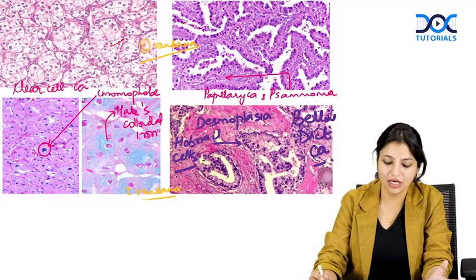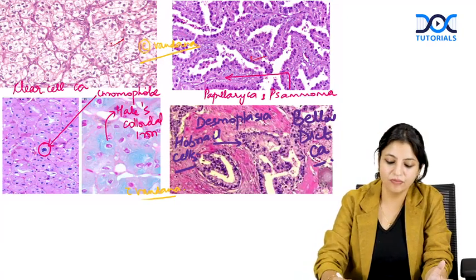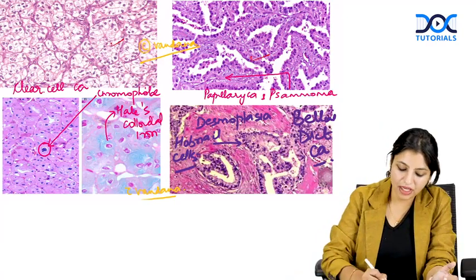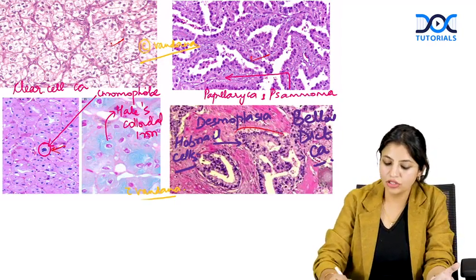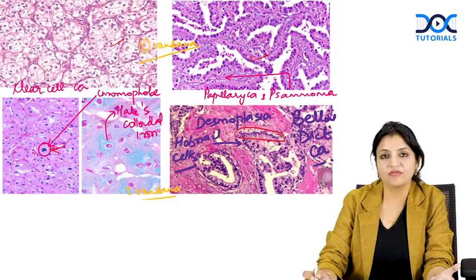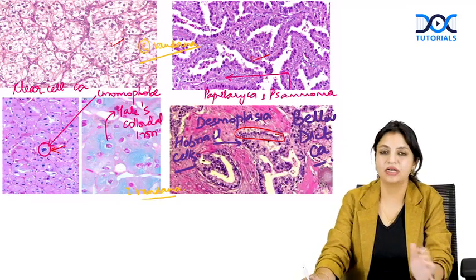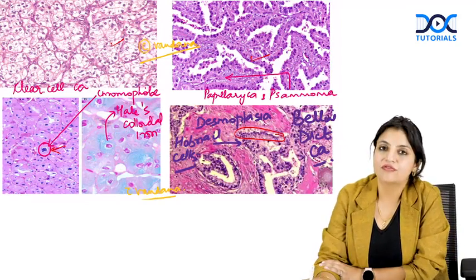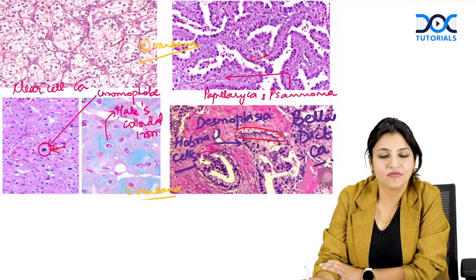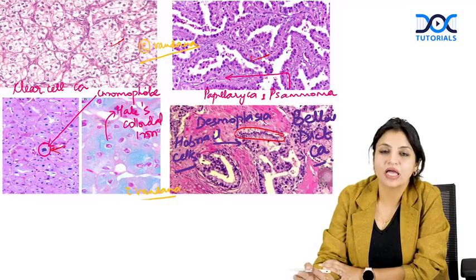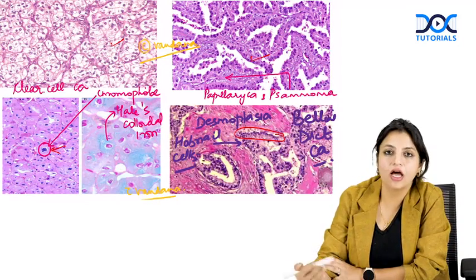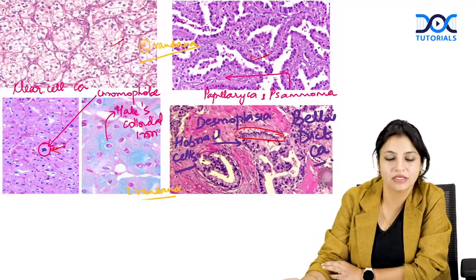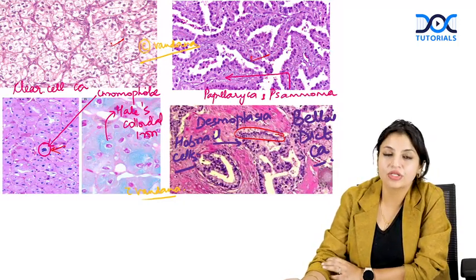Clear cell carcinoma, papillary carcinoma with perinuclear halo growing like a plant, chromophobe with nucleus shifted to the periphery, and collecting duct cancers with extensive desmoplasia — these are the four important cancers to remember. Apart from that, XP translocation is a mixture of clear cell and papillary, and medullary carcinoma arises in patients with sickle cell trait.